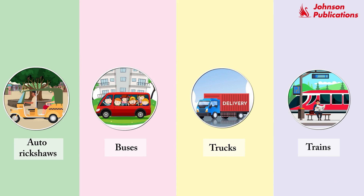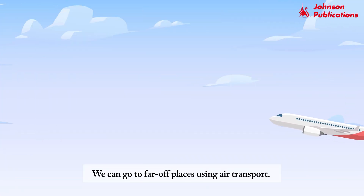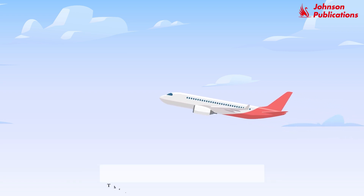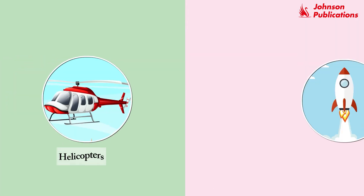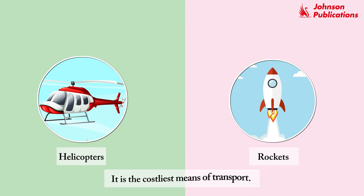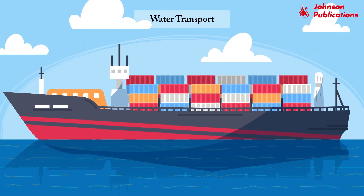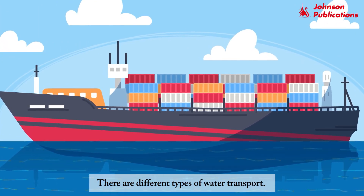Air transport: we can go to far-off places using air transport. Air transport consists of aeroplanes, helicopters, and rockets. It is the costliest means of transport.